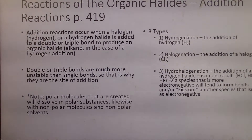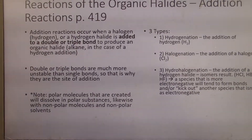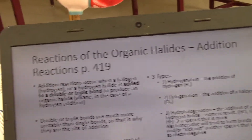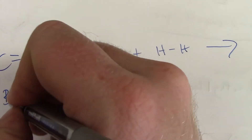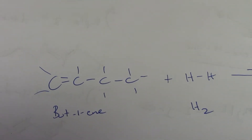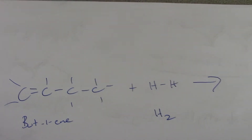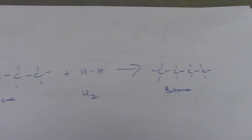Double or triple bonds are much more unstable than single bonds, so that is why they are the site of addition. Polar molecules that are created will dissolve in polar substances, and nonpolar molecules dissolve in nonpolar substances. For example, but-1-ene plus H2 gas — we hydrogenate this, turning butene into butane. That's an example of hydrogenation.